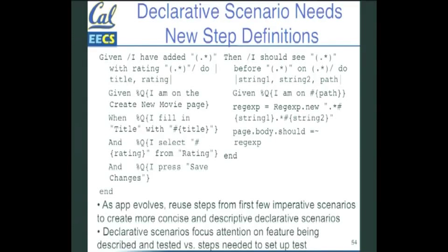Over time, as you get more experience with this, more and more of your scenarios will be declarative, a lot shorter, and actually a lot more useful. The implicit versus explicit distinction is kind of obvious, or not that big a deal when you think about it. But figuring out how to write your steps declaratively will make your code a lot easier to use.